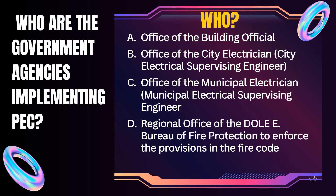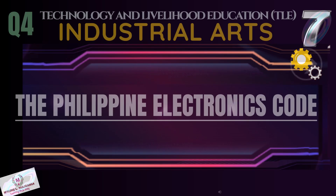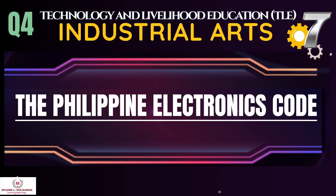Who are the government agencies implementing the PEC? One: Office of the Building Official. Two: Office of the City Electrician / City Electrical Supervising Engineer. Three: Office of the Municipal Electrician / Municipal Electrical Supervising Engineer. Four: Regional Office of the DOLE. Five: Bureau of Fire Protection, to enforce the provisions in the Fire Code.